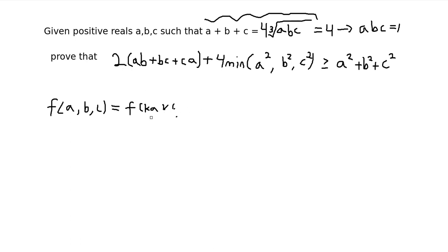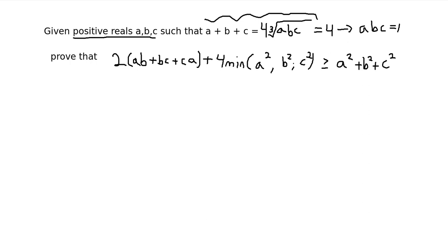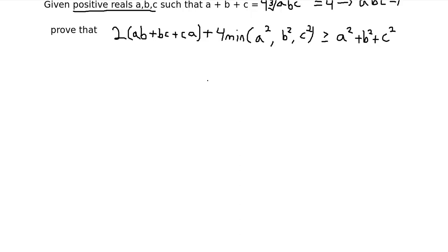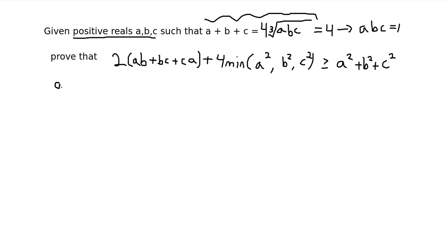Next, we have our inequality with a minimum value function, which looks scary, but what we're taking the minimum of is just a squared, b squared, and c squared. Since everything is symmetric with respect to a, b, and c, we can say: let a, b, and c be ordered such that c is the minimum. So instead of the minimum, we just have 4c squared.